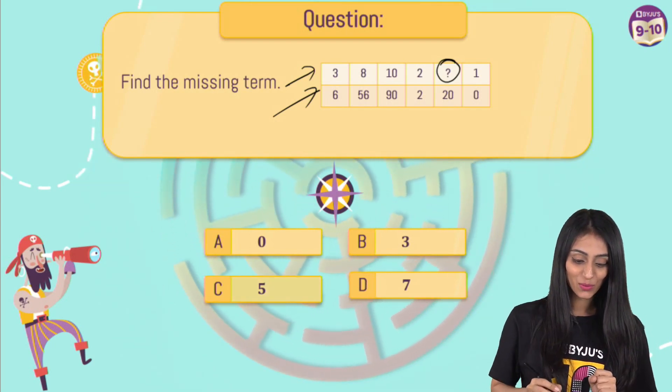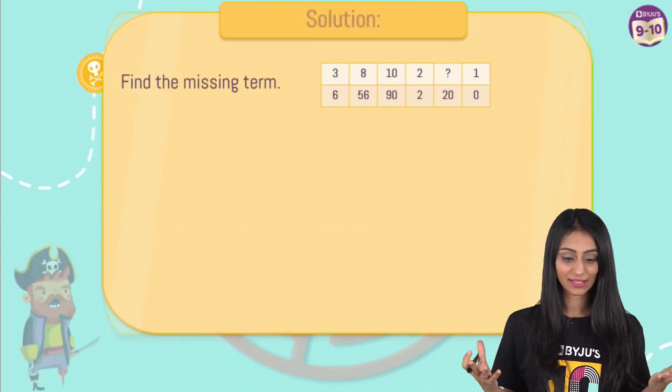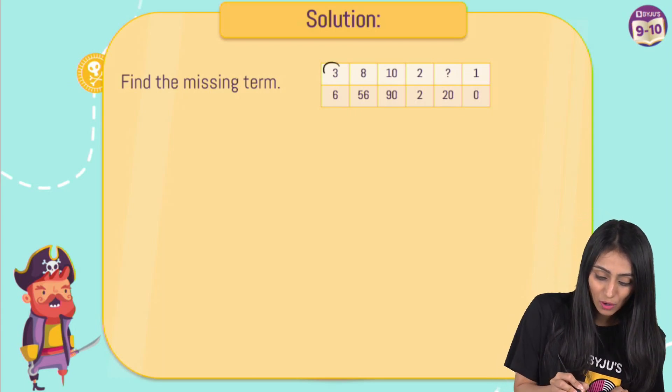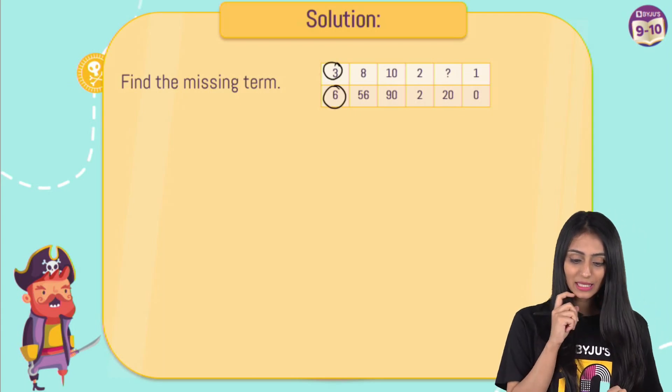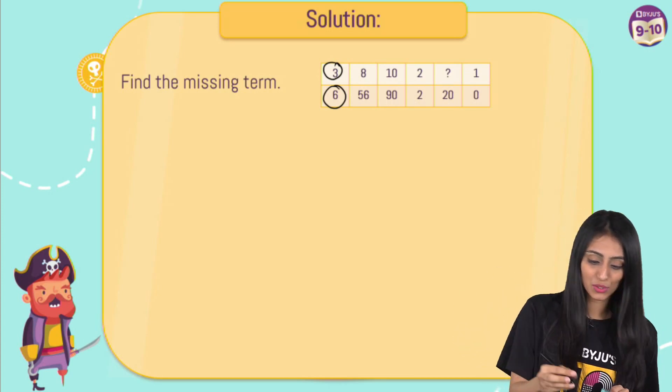Now let me tell you what the right answer is. So right answer is option C, which is five. So let's see how we arrive at the solution. If you carefully observe this pattern over here, here I have got three, I have got six, seems like it is double of it, right? So the same pattern should follow for the other numbers also.